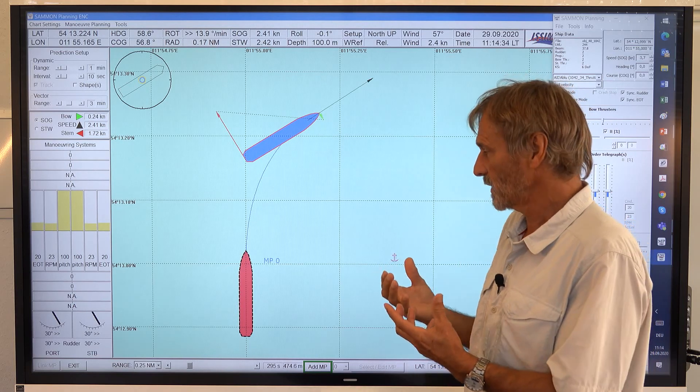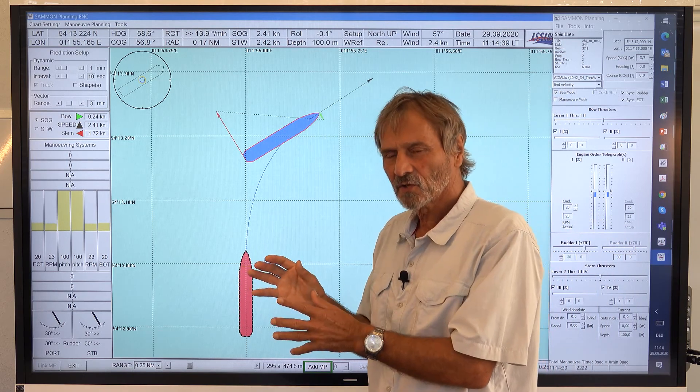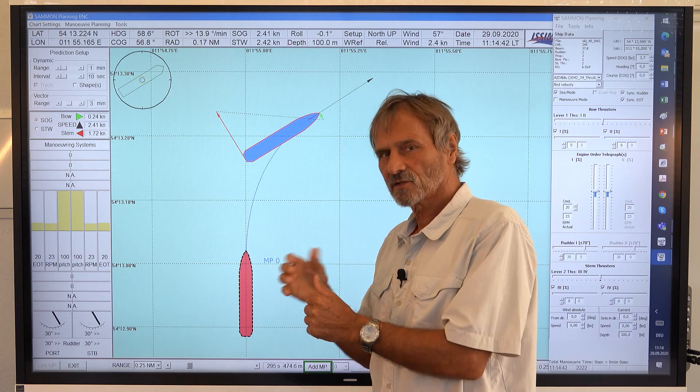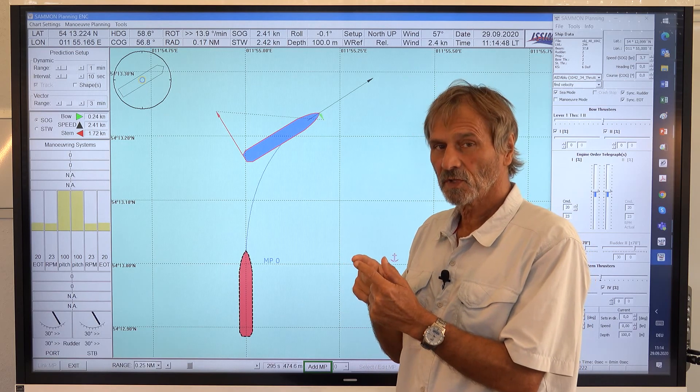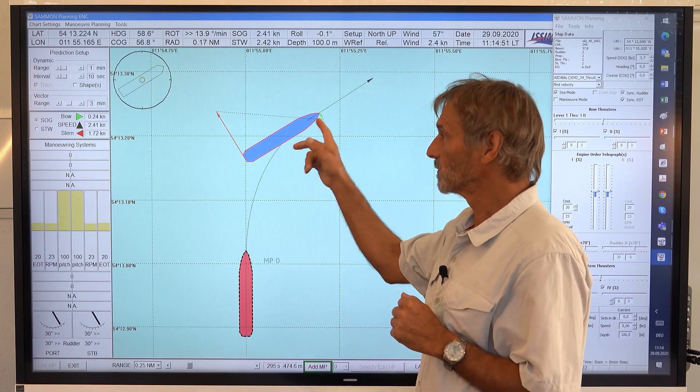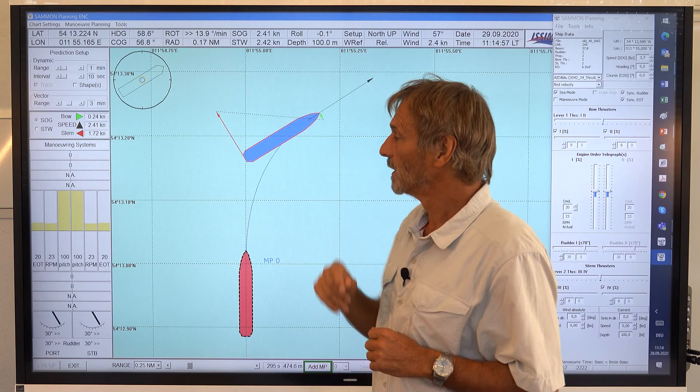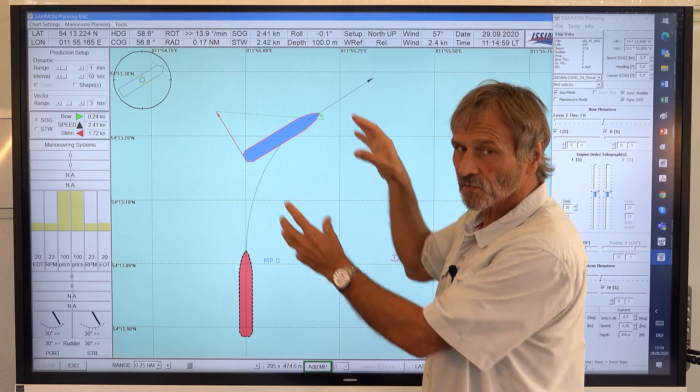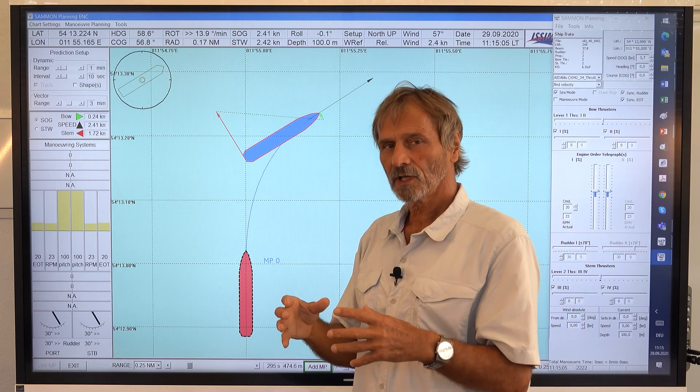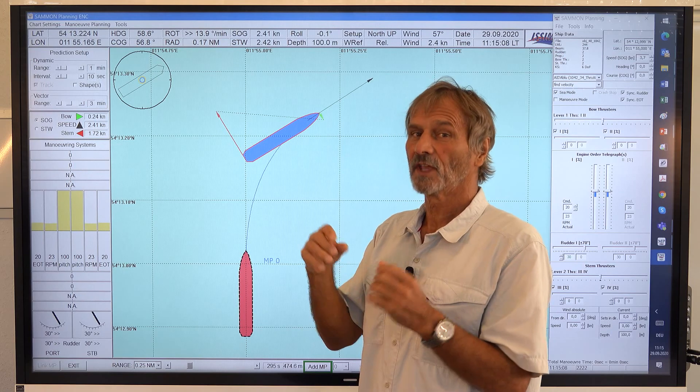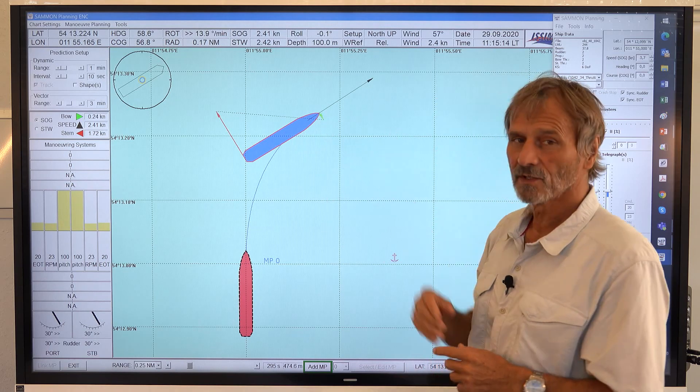So what we see is that the pivot point is not starting at the center because when the rudder is effective, starting to be effective, then there's already a drift and a turning speed. And we learned that the location, the position of the pivot point is depending on the ratio between rate of turn and the transfer speed, the drift angle, so to say. If there's pure turning, then the pivot point is at the center. But if there is drifting superimposed, then it's getting to the bow in this case.